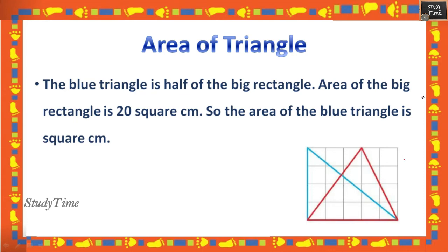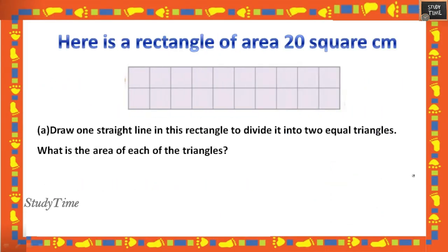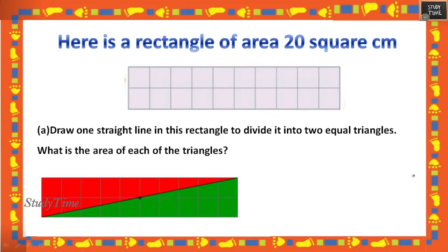Area of triangle: a rectangle is given with two triangles drawn inside it. The area of the big rectangle is 20 square centimeters. The area of the blue triangle is half of 20 = 10 square centimeters. Next: a rectangle of area 20 square centimeters — draw one diagonal line to divide it into two equal triangles. The area of each triangle is half of 20 = 10 square centimeters.